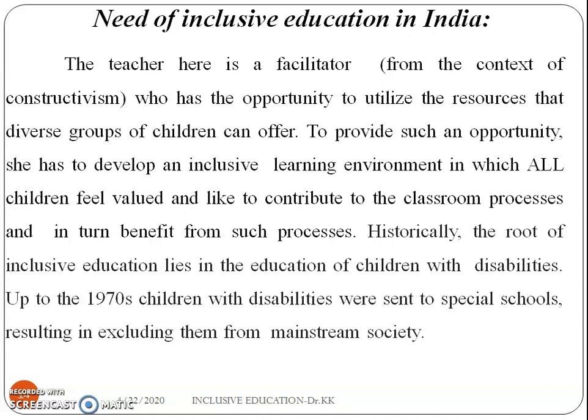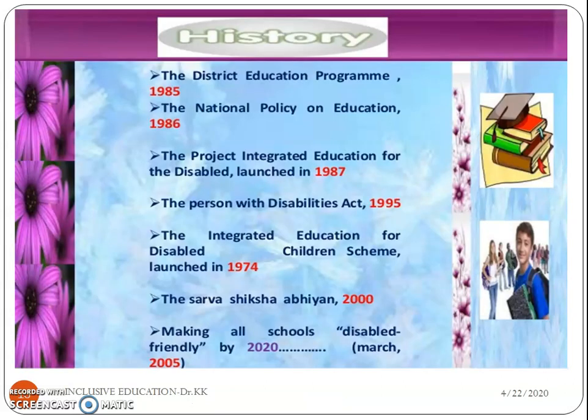Next, what is the need for inclusive education in India? Before that, we need to go through the history of inclusive education. Previously, inclusive education was considered integrated education, and after integration it changed into the format of inclusive education. The District Education Program was introduced in 1985, followed by the National Education Policy in 1986. In 1987, Integrated Education for the Disabled was projected and launched. In 1974, the Integrated Education for Disabled Children scheme was introduced. The Persons with Disabilities Act came in 1995, and in 2000, Sarva Shiksha Abhiyan was introduced, giving more scope to inclusive education.